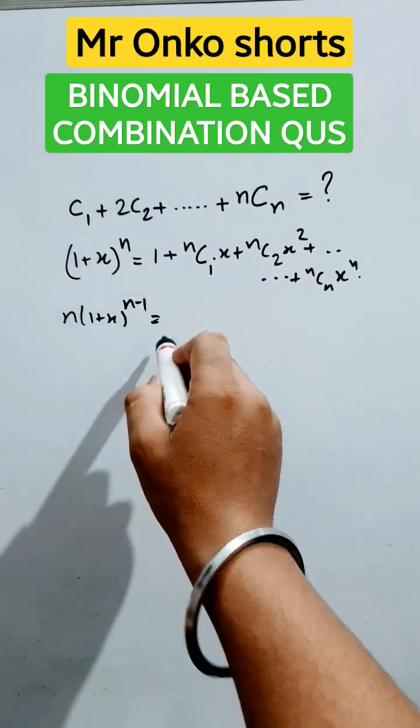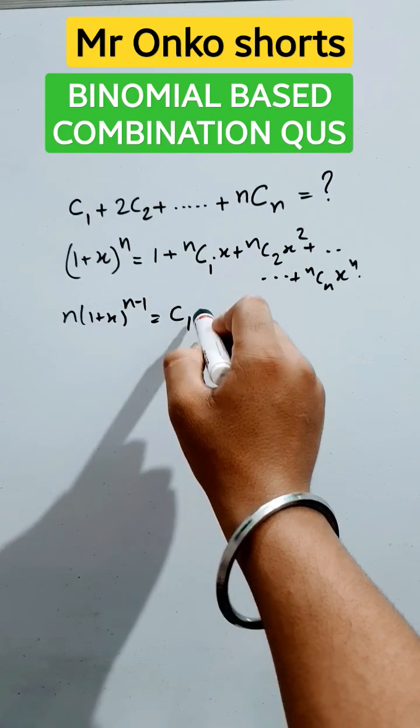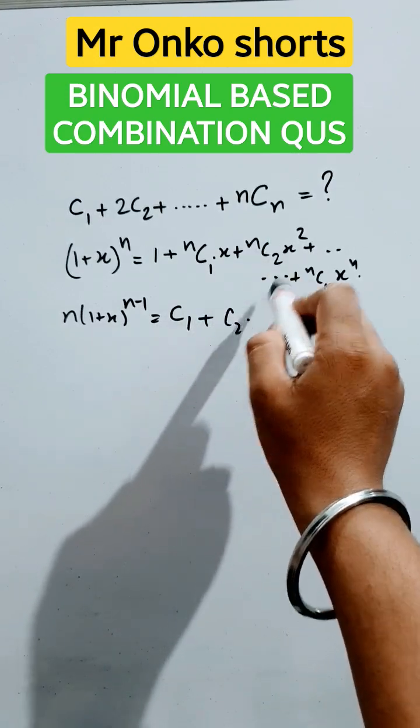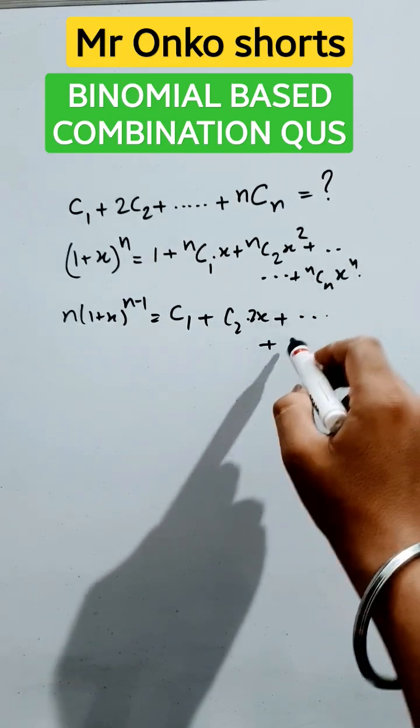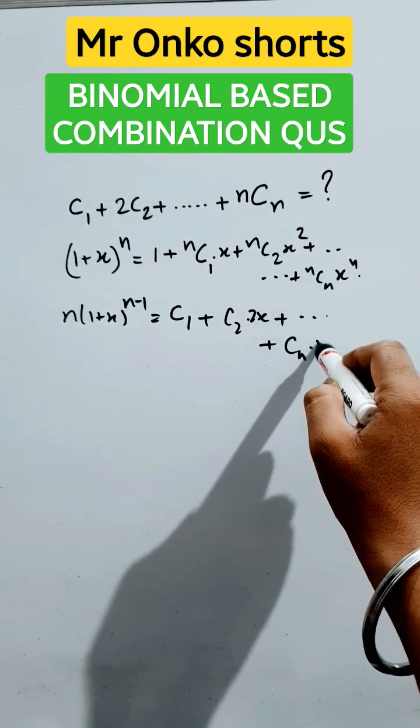This equals C₁ + C₂·2x + ... + Cₙ·n·x^(n-1). Now the differentiated form shows C₁ plus C₂ times 2x plus dot dot Cₙ times n times x raised to the power n minus 1.